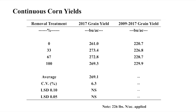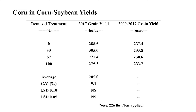If we look at yields in corn after corn, there really are not any significant differences, either looking at the latest published data from 2017 or the long-term data from 2009 to 2017. Sometimes we see a little bit higher yield for the 100 percent removal. This tendency towards higher yield is perhaps an effect of warmer soil temperatures in the spring as the crop is planted. These are all no-till, so there would be no residue cooling the surface.